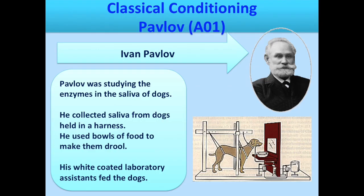We'll look at classical conditioning first, and your main researcher for this is someone called Pavlov. Pavlov accidentally discovered classical conditioning — he didn't set out to study it. He was actually studying the enzymes in the saliva of dogs. The dogs were kept in a harness and he used bowls of food to make them drool so he could collect the saliva. Instead of feeding them himself, he used lab assistants who were wearing white coats.